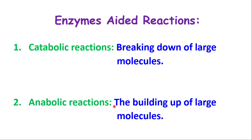It's very important for you to understand that enzyme-aided reactions can be of two types. One, they can be catabolic reactions — catabolic reactions are reactions that break down large molecules to smaller molecules. Remember the word: C for cut — you cut them up into small pieces. And anabolic reactions are reactions that build up large molecules from smaller molecules. So, catabolic to break down and anabolic to build up.